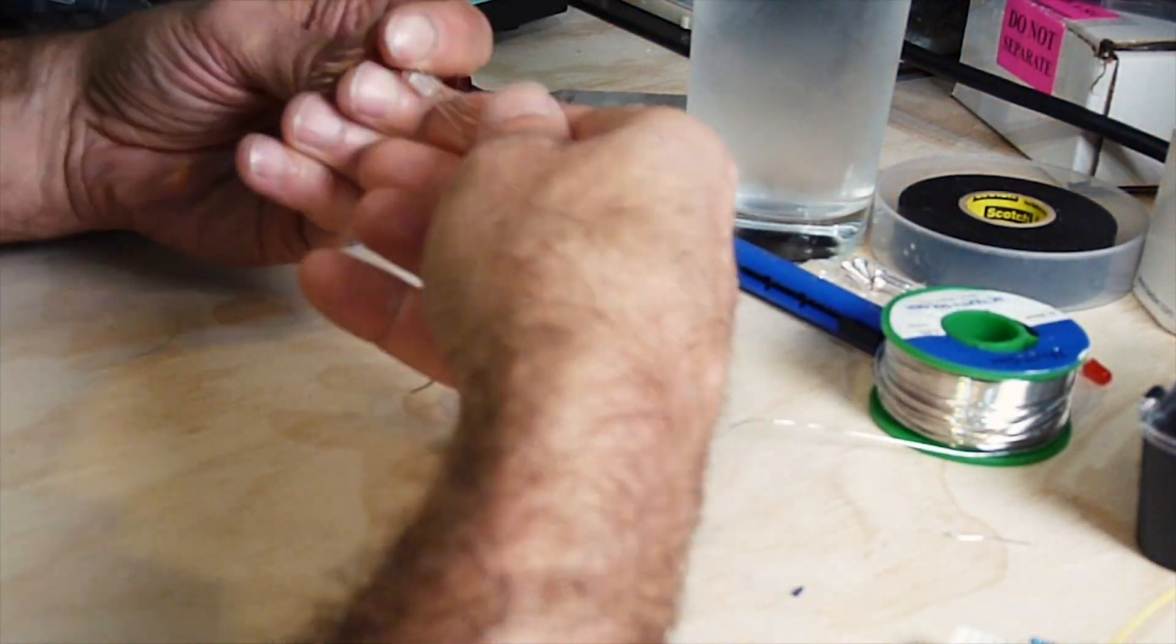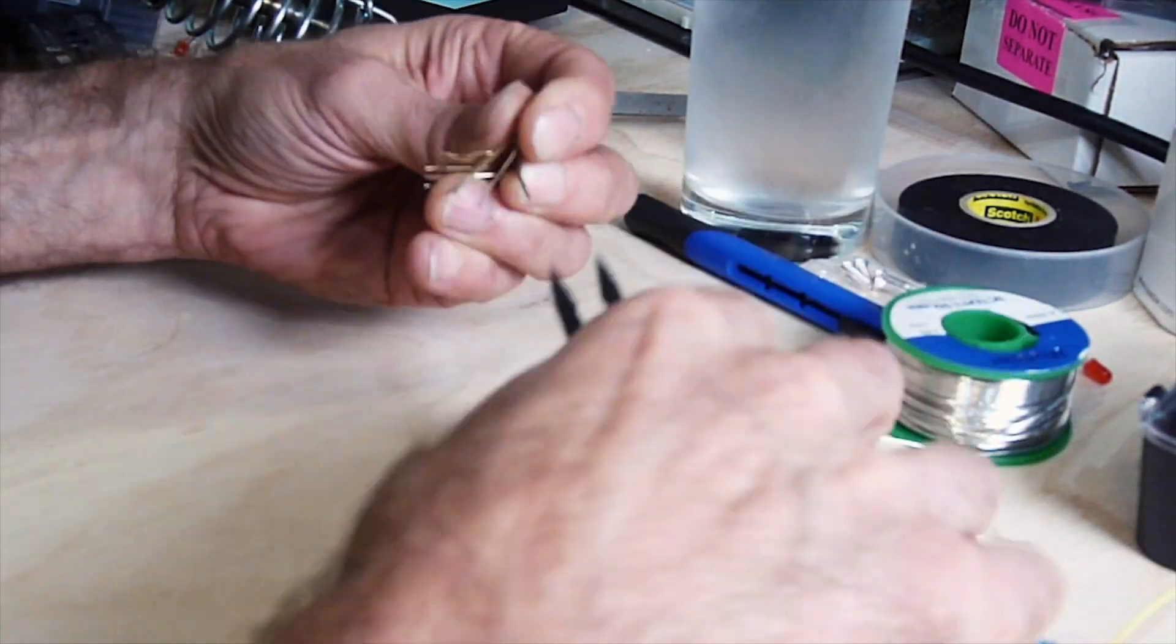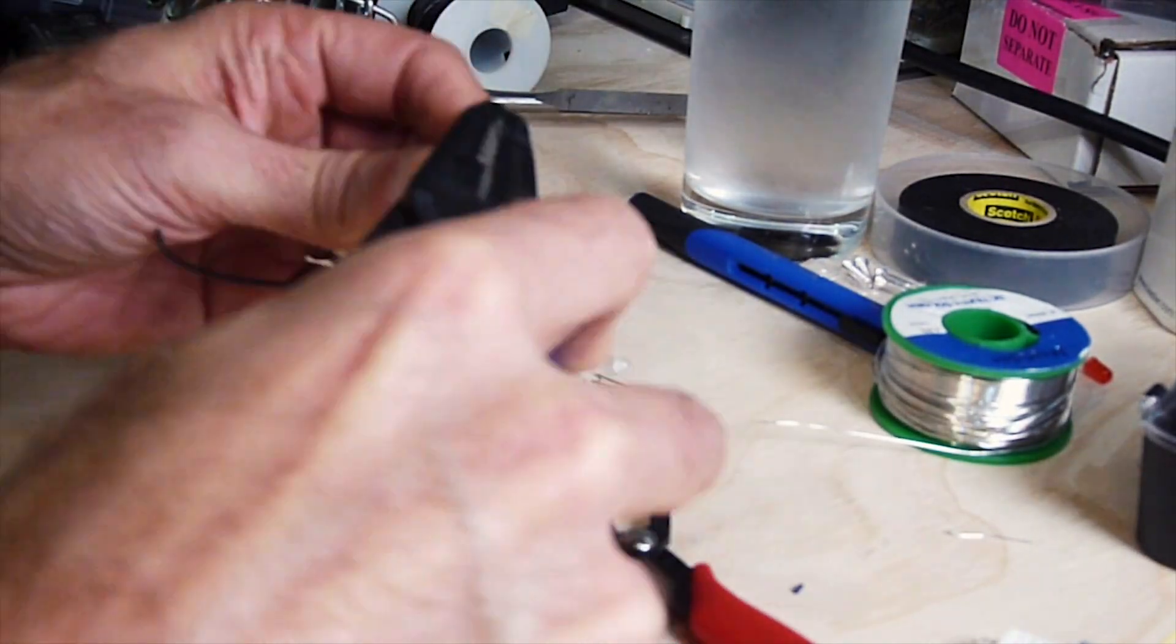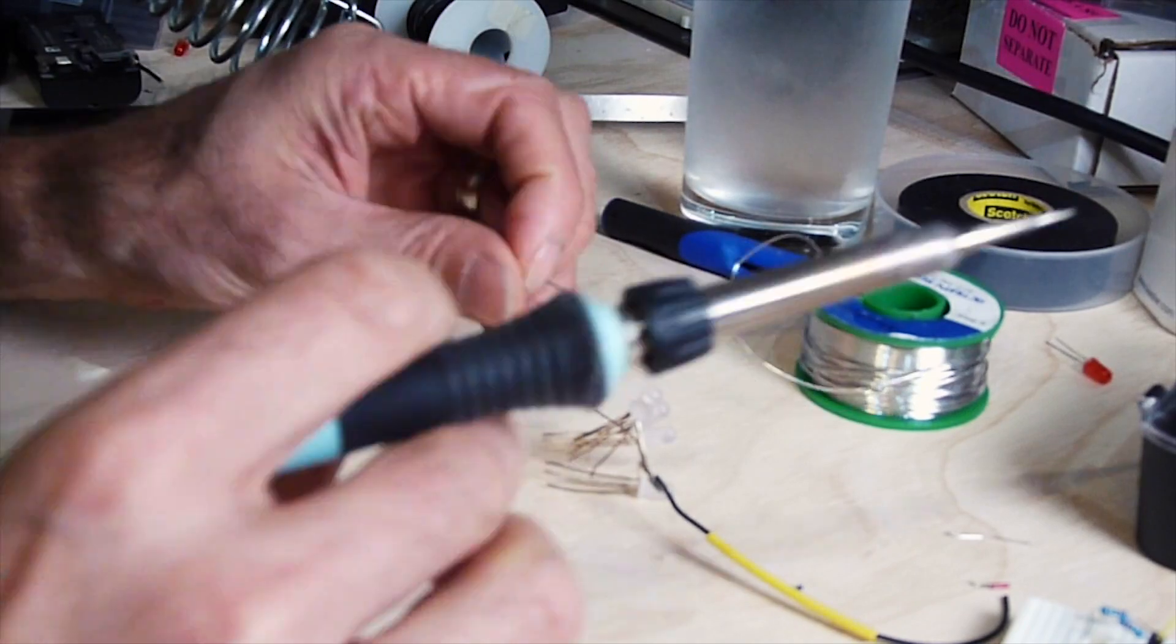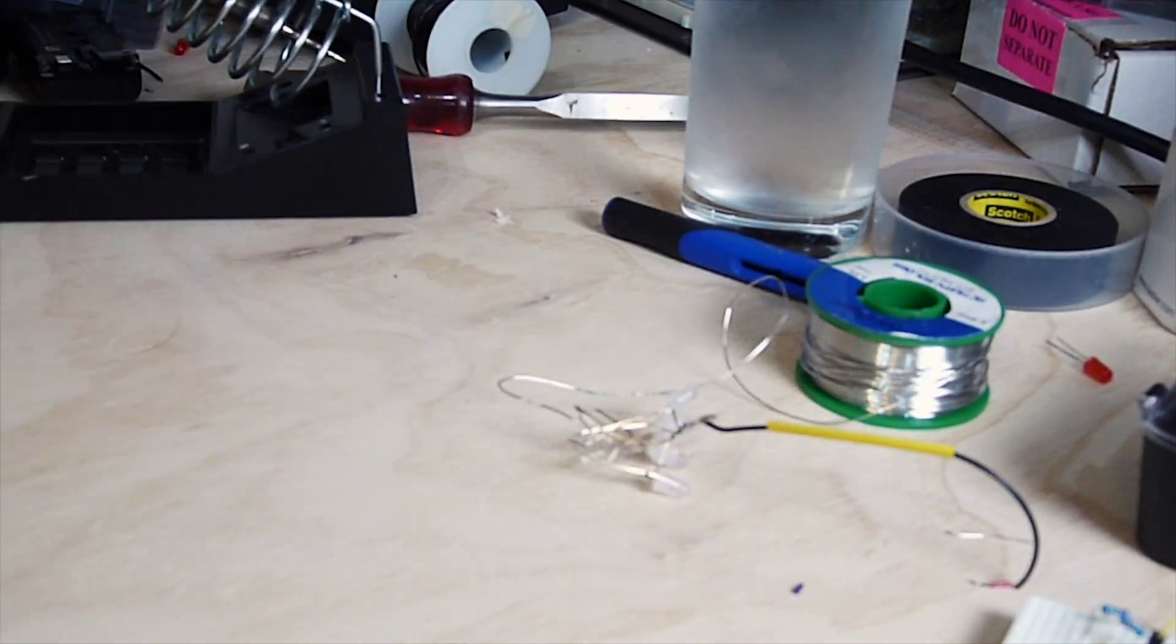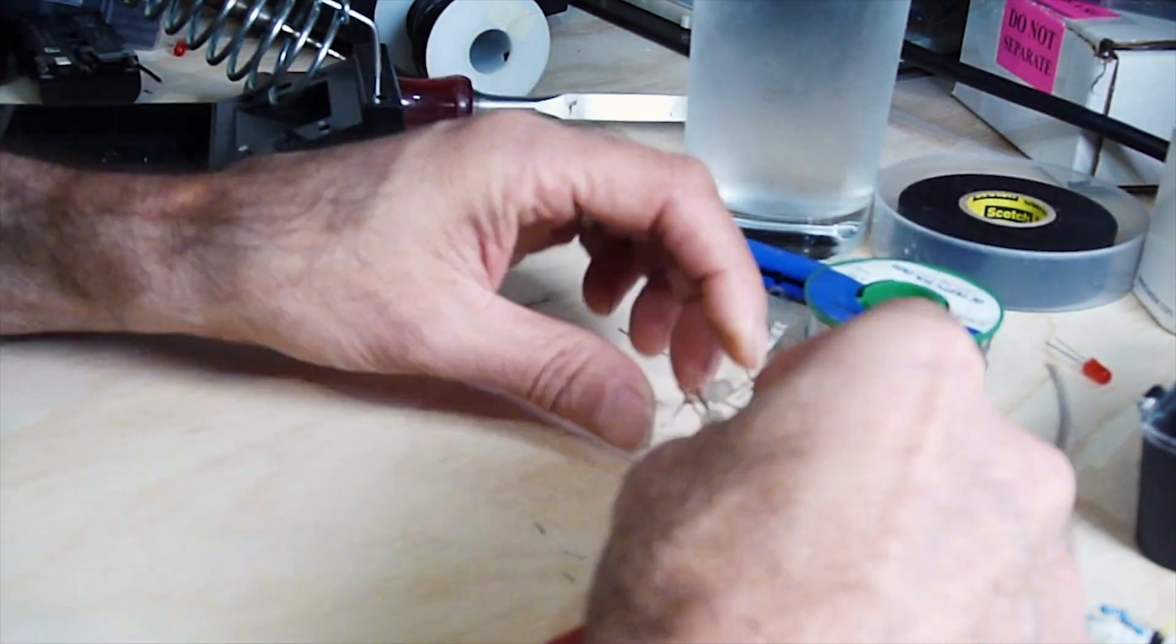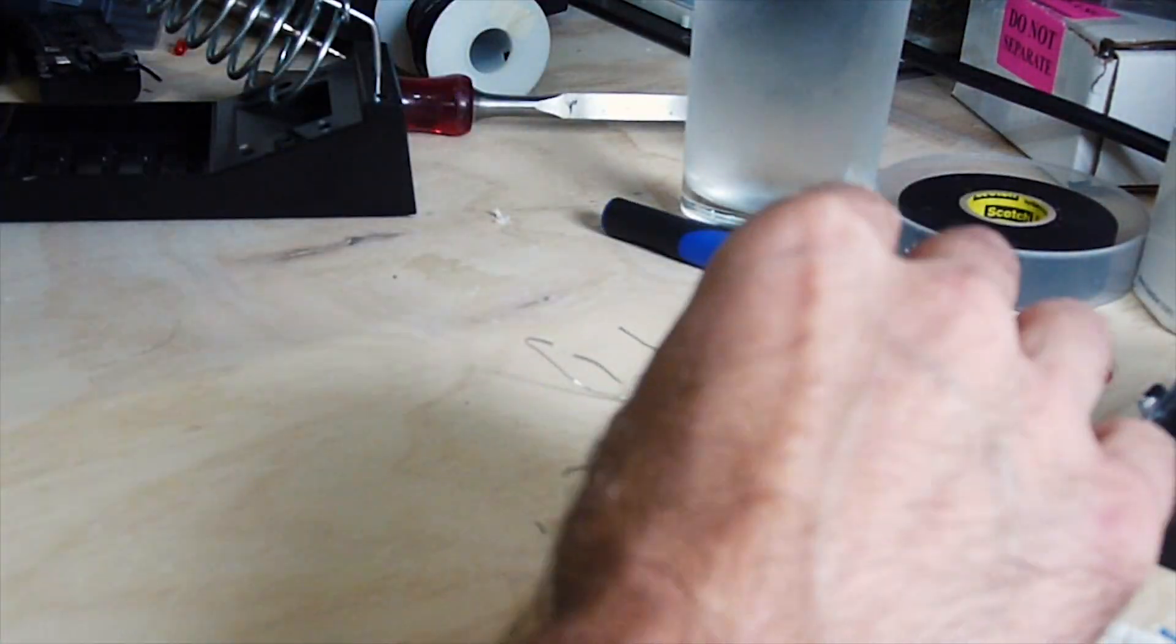And now the electronics part. These are the LEDs that were kind of twisting all the ends together. There's RGB LEDs and using 220 ohm resistors for each pin. So the red, the green, and the blue all get their own electric signal. And then there's a ground.